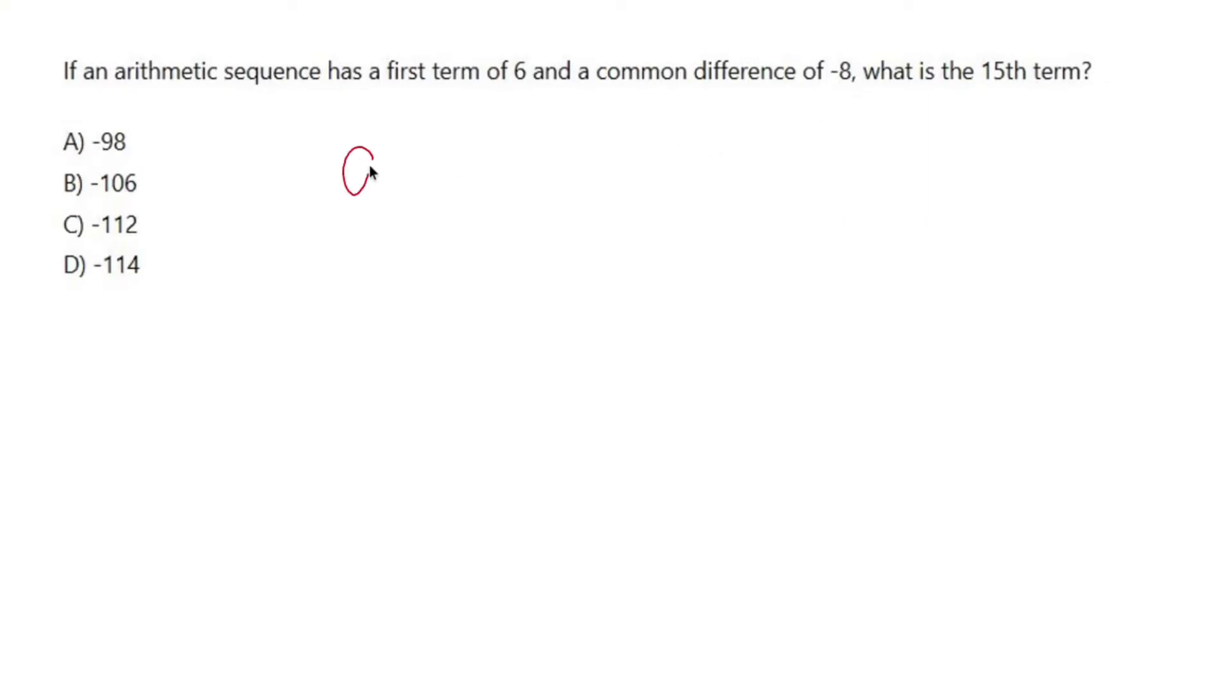Well, let's whip out the arithmetic sequence formula. a sub n, which means the nth term, is going to equal a sub 1, which means the first term, plus n, which is the same n that we talked about a second ago, minus 1 times d, the common difference.